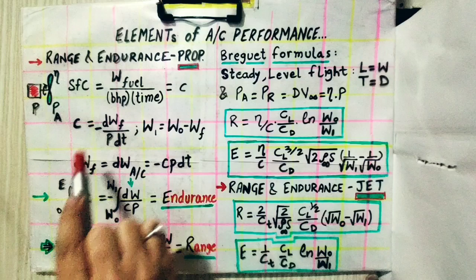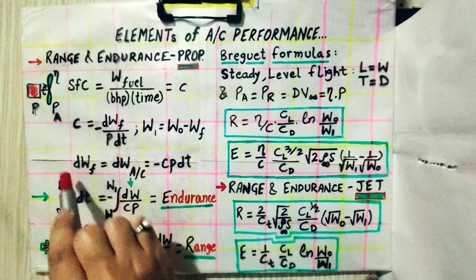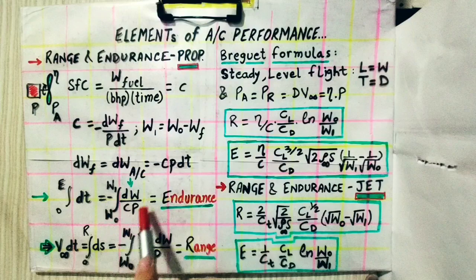From the SFC definition, we can write that dW_fuel equals dW_aircraft, since the aircraft weight changes only because of the changing fuel weight. This gives us dW = −C·P·dt. Rearranging, we bring −C·P downward to solve for dt in terms of dW.